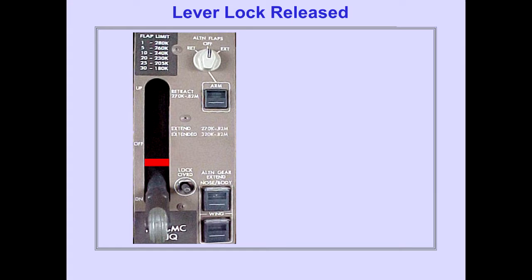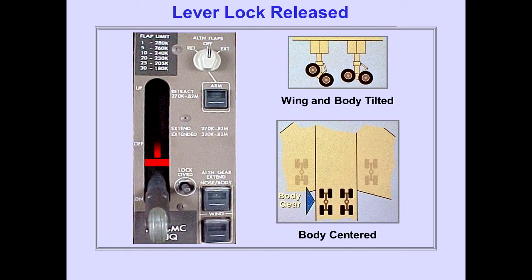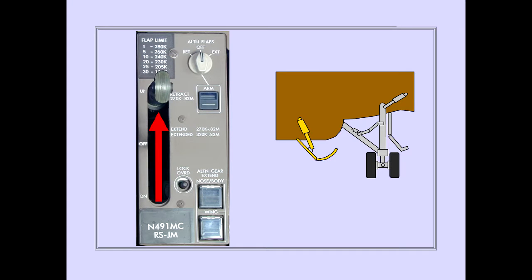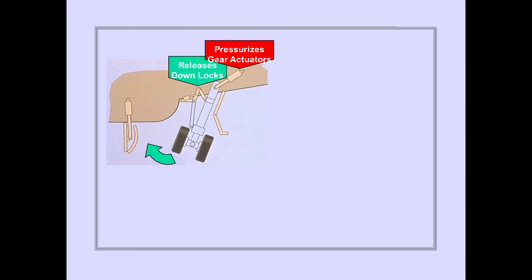In flight, the gear lever lock is released when the wing and body gear are tilted and the body gear are centered. The airspeed limitation for gear retraction is 270 knots or 0.82 Mach. This airspeed limit prevents structural damage to the gear doors. Placing the gear lever up pressurizes the gear door actuators to open the gear doors. When the doors are open, hydraulic pressure releases the gear down locks and pressurizes the gear actuators. The gear move to the up and locked position and the gear doors close.